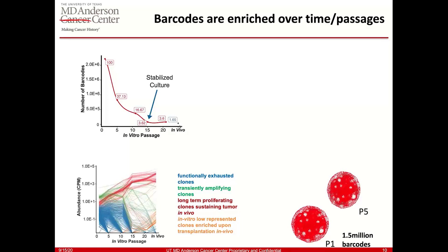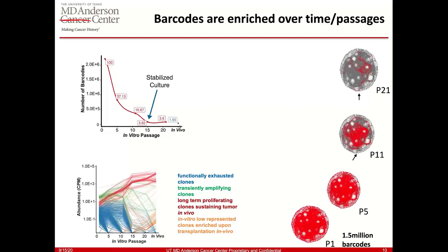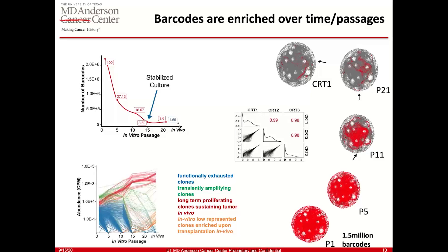Here is another representation of the same dynamics. I've represented 1.5 million barcodes, removing those with very low numbers, and following them across passages. Red signifies the barcodes are present; gray signifies they are not. By passage 5 and passage 11, we can see a significant proportion of barcodes have exhausted. After transplantation, we create clonal replica 1 and see only a fraction of barcodes represented in red. If we compare the composition of the three clonal replica tumors, we see a Pearson correlation of 0.99 and 0.98, suggesting that at this time point, even if we create a cohort of mice, all of them would have the same set of barcodes distributed in a practically similar fashion.